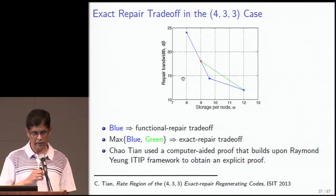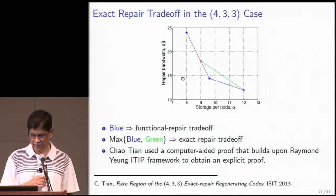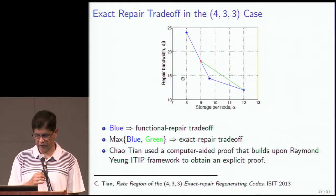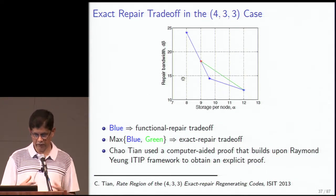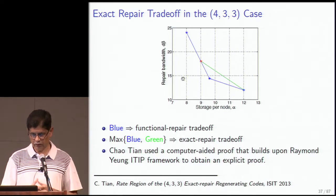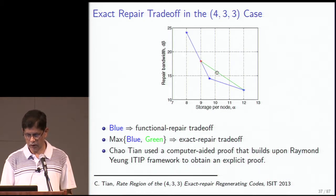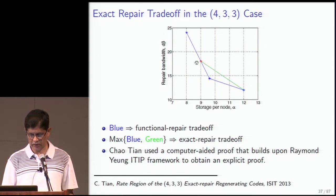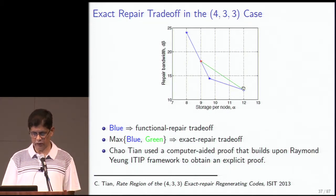Alex felt emboldened to wager 12 bottles of wine to anyone who solved this problem — determining whether the exact repair trade-off is really different from the functional repair trade-off. This was solved in a very interesting way by Shaotian from AT&T. He focused on the particular case n=4, k=3, d=3, and used a computer-aided proof building on Raymond Yeung's information inequality prover framework. He phrased all the regenerating code requirements in information-theoretic terms, reduced them to inequalities, and derived a new bound.